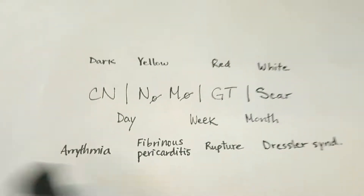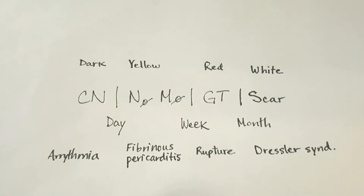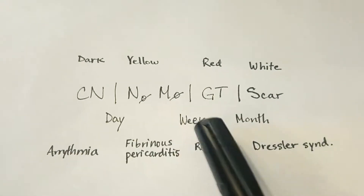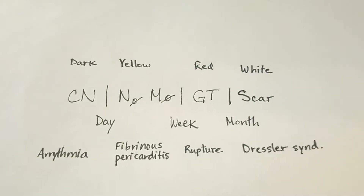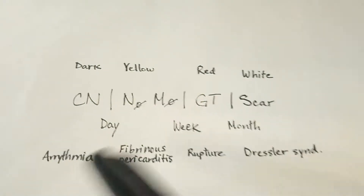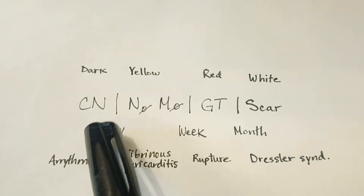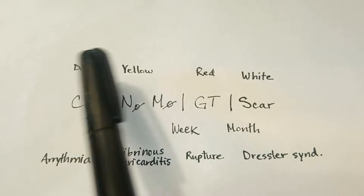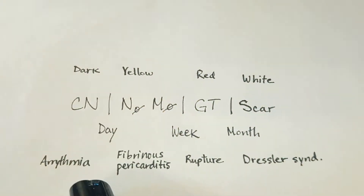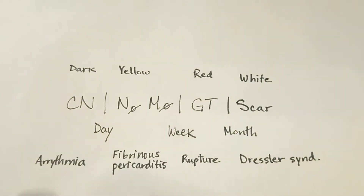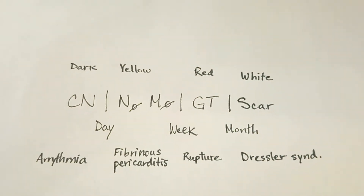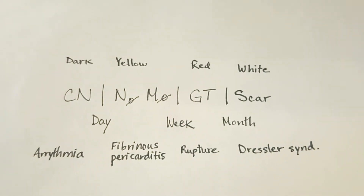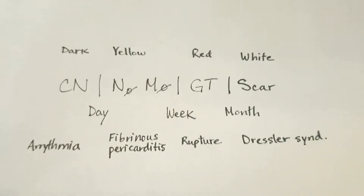This diagram is going to divide major events into a day, a week, and a month, give or take. The first event you should know is early coagulative necrosis, and that's going to give a dark mottling appearance to the heart in the area of infarct.